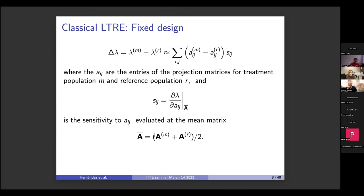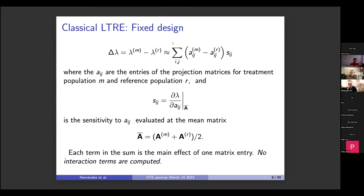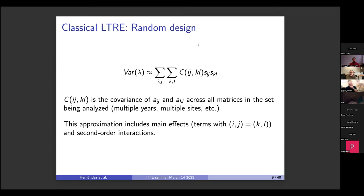The sensitivities are evaluated at the linear mean of the treatment and reference population matrices. Each term in this sum is referred to as a contribution — the main effects of each matrix entry — and no interaction terms are computed in this method. In random design LTRE, we decompose the variance in lambda into contributions from the variance-covariance matrix, where C_ij,kl is the covariance of the ij and kl entries across all matrices. This approximation includes main effects — the diagonal terms — and second-order interactions, the off-diagonal terms.